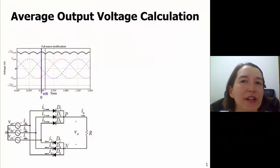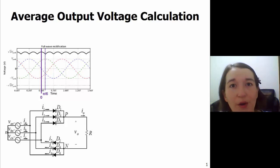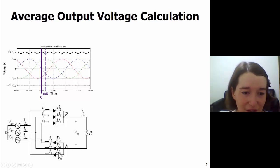Here we're talking about the average output voltage calculation for the three-phase full-wave rectifier. The rectifier is shown down here. We have our three-phase voltages and they're all equally spaced by 120 degrees, and we have six diodes here that produce full rectification, full-wave rectification.